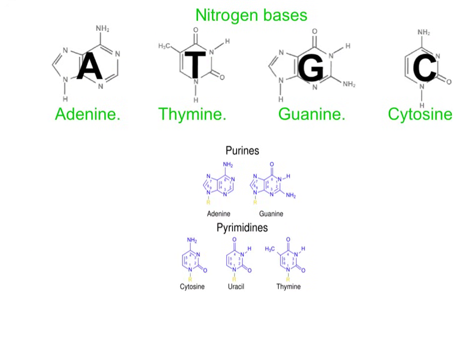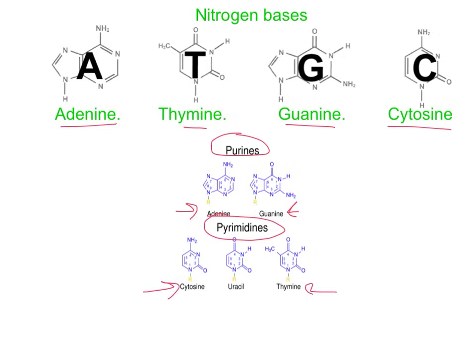Purines are the double ring structures — adenine and guanine. Pyrimidines are the single ring structures — cytosine, thymine, and uracil, which is in RNA. Thymine is in DNA only; uracil takes its place in RNA. To remember them: pyrimidines are 'cut' from purines. Pyrimidines (CUT) are cytosine, uracil, thymine. My big long word 'pyrimidine' is actually my small molecule, and my short word 'purine' is the bigger molecule.